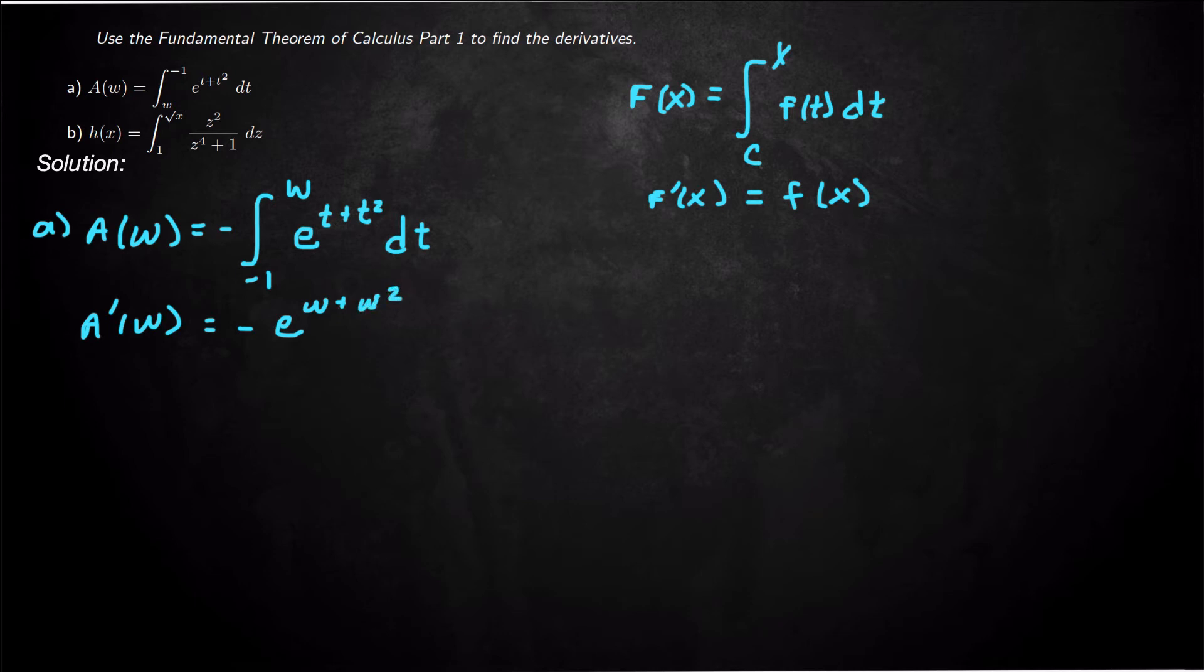And that's the derivative of this function. So they tried to trip us with the w and then the upper bound being the constant, but we are too good for that.